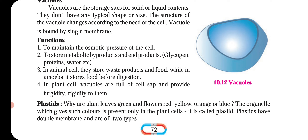In animal cells, there are waste products and food stores. In amoeba, which is a type of organism, the food is stored for digestion. In plant cells, vacuoles are present and they provide flexibility and rigidity.